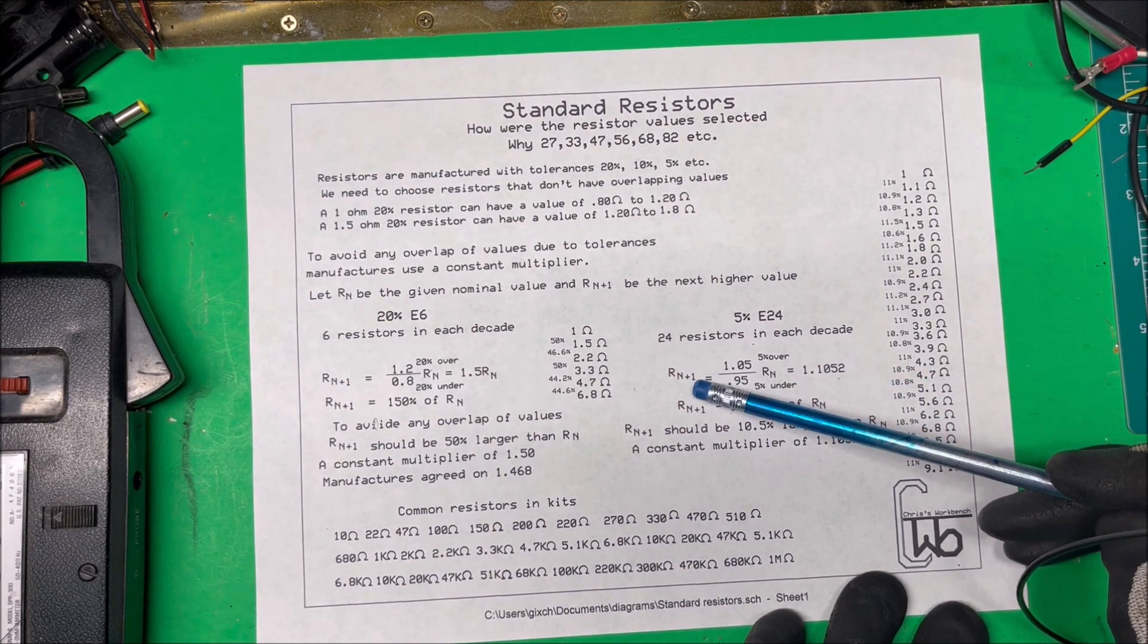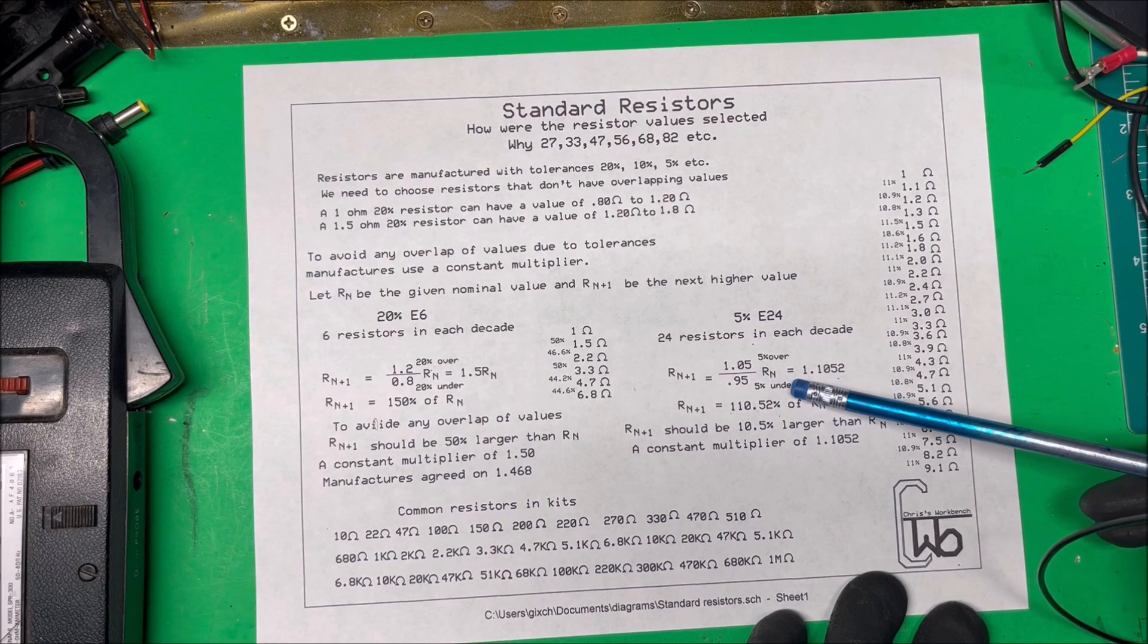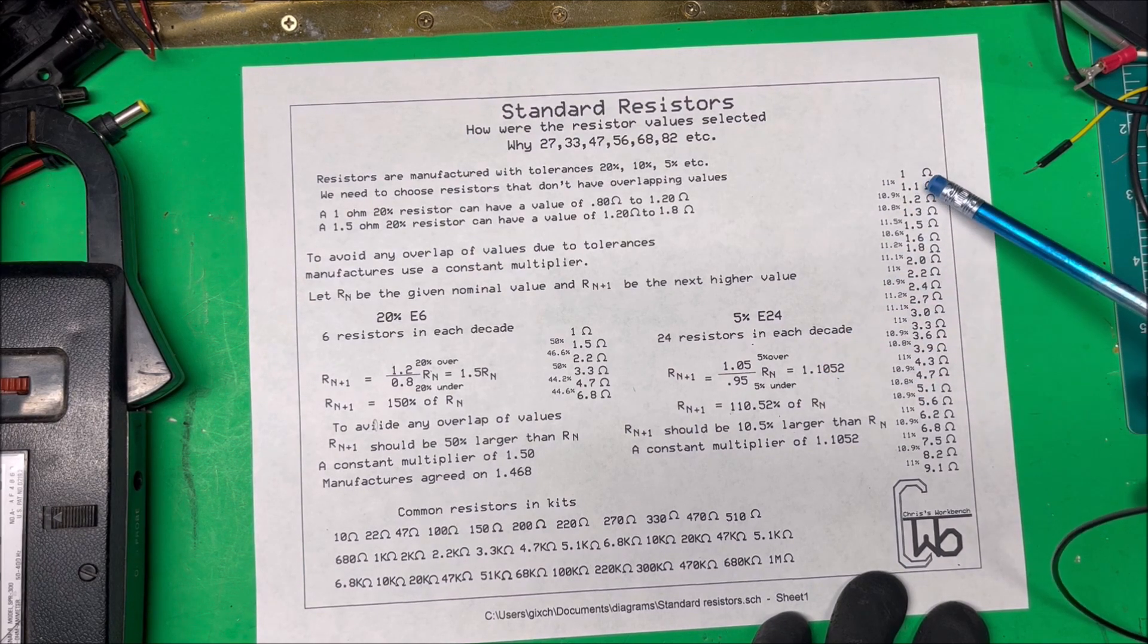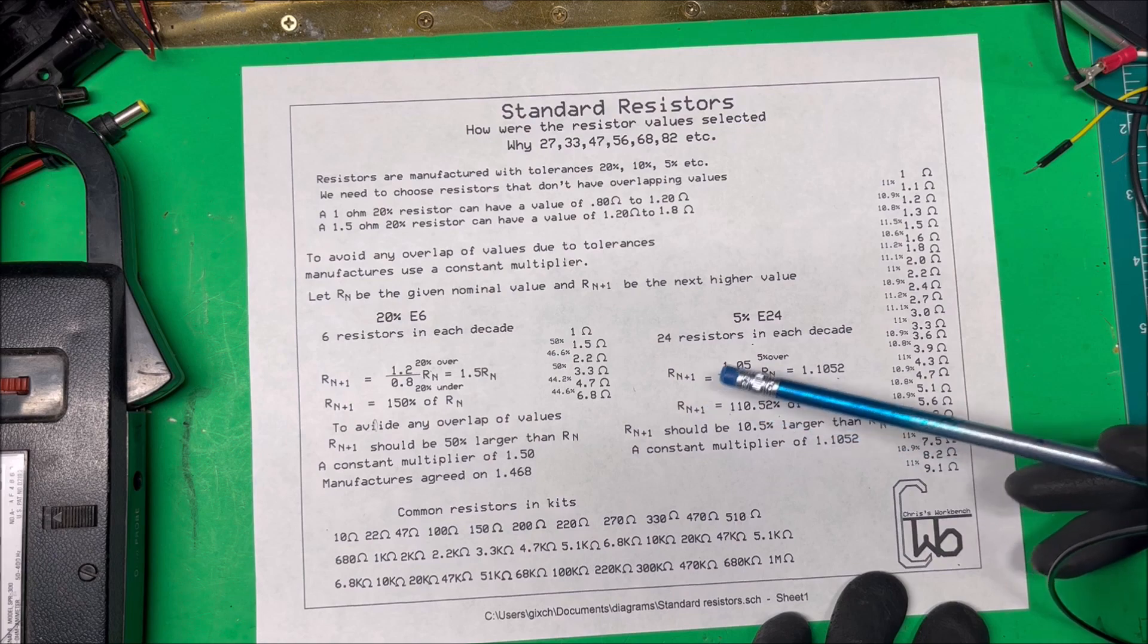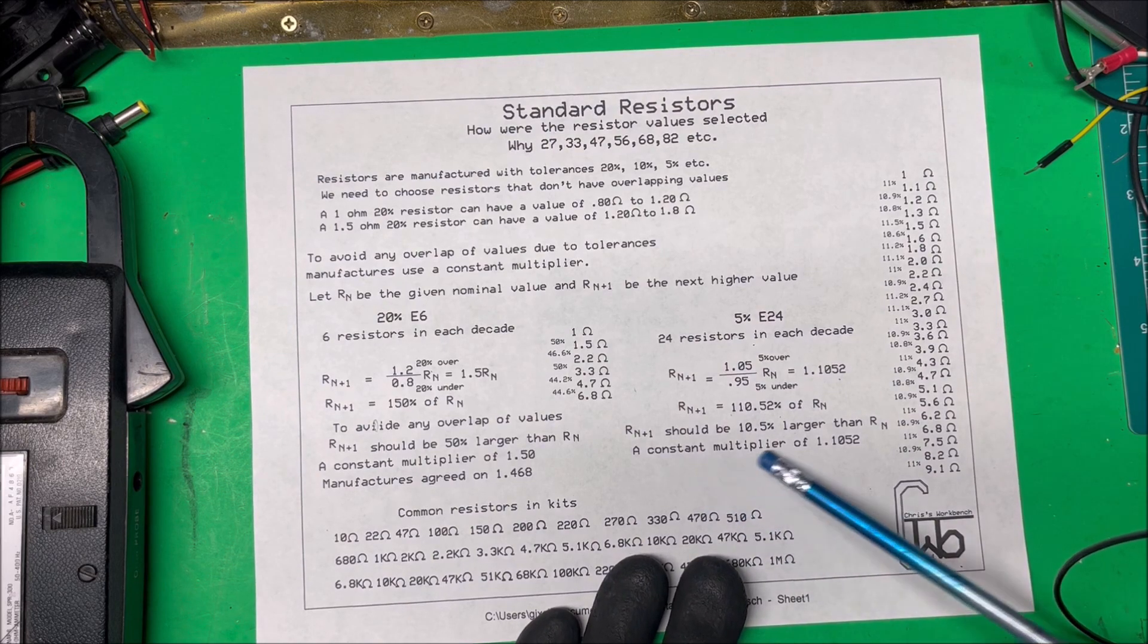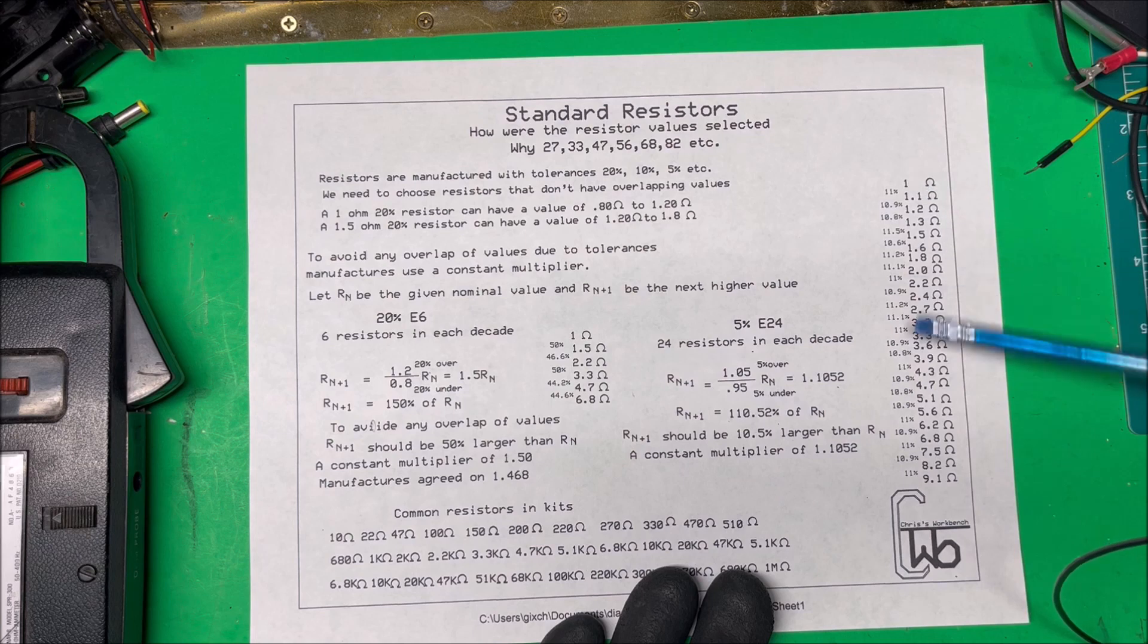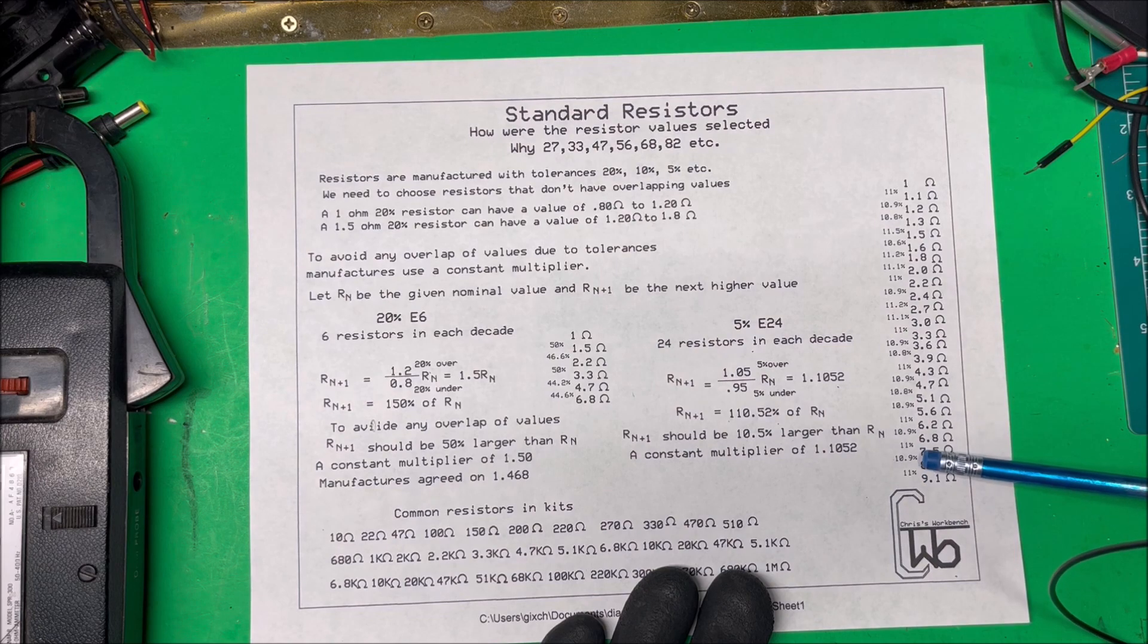To get those values you take the next higher value equal to 1.05 (five percent over) divided by 0.95 (five percent under) times the previous value of resistor. So that's 1.1052 times that value to get your next value resistor. The next higher resistor should be 10.5 percent larger than the previous resistor, so your multiplier is going to be 1.1052. Again, they wanted to keep these in line with the other resistors so the numbers are all the same. The 10 percent resistors, there's going to be fewer of those than the five percent, but same numbers, same values.